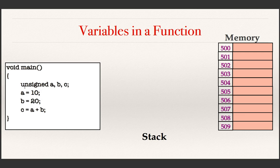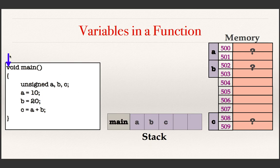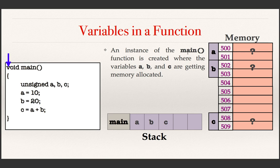In this example, there is a function main which creates three variables a, b and c of type unsigned. Let us see how the execution progresses. This blue arrow represents that the function main is invoked for execution and as a result, an instance of the function main is created where the variables a, b and c are getting memory allocated. Consider the variable a, which is an unsigned integer. Two bytes of memory is required for an unsigned integer — that is our assumption. This figure shows that two bytes at addresses 500 and 501 are allocated for the variable a.